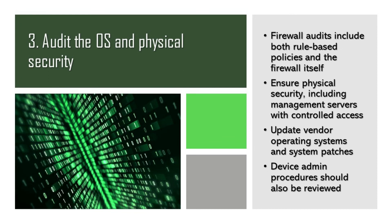Step three: audit the OS and physical security. Firewall audits don't just involve the rule-based policies but the actual firewall itself. It's important to ensure that the firewall has both physical and software security feature verification, involving the hardware and OS software of the firewall. There should be physical security protecting the firewall and management servers with controlled access, ensuring only authorized personnel can access the firewall server rooms. Vendor OS patches and updates are extremely important and should be verified. The operating system should also be audited to ensure it passes common hardening checklists, and device administration procedures should be reviewed.